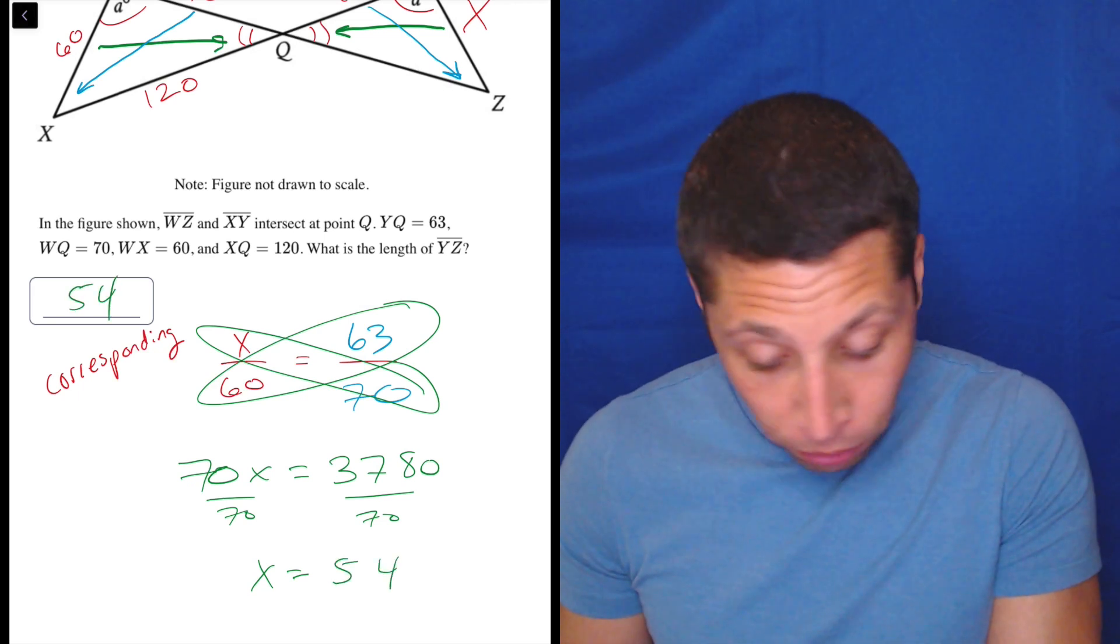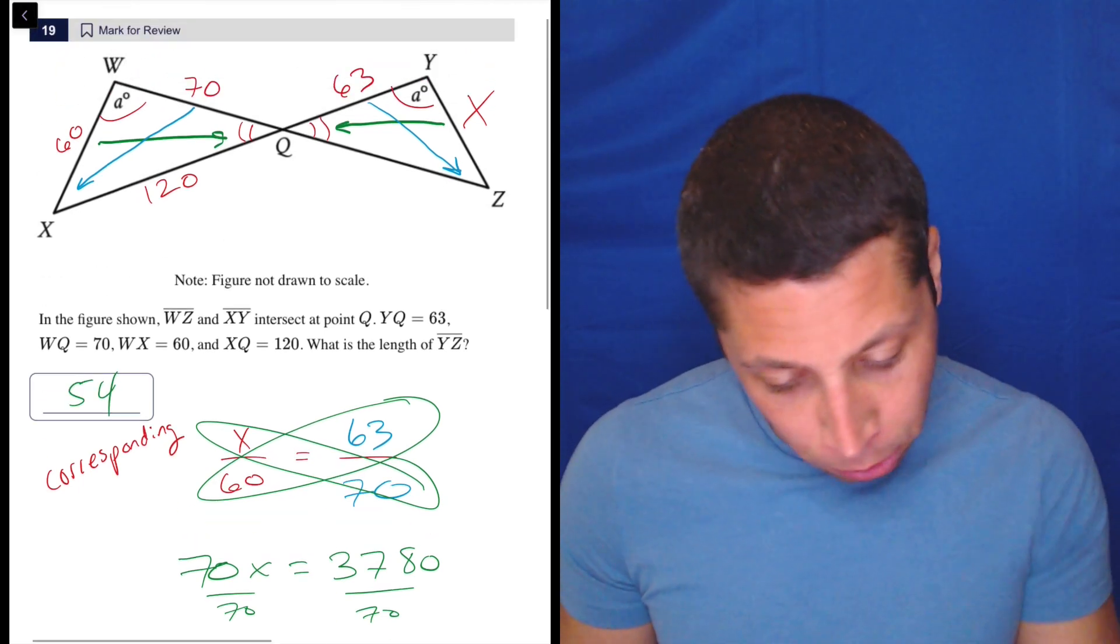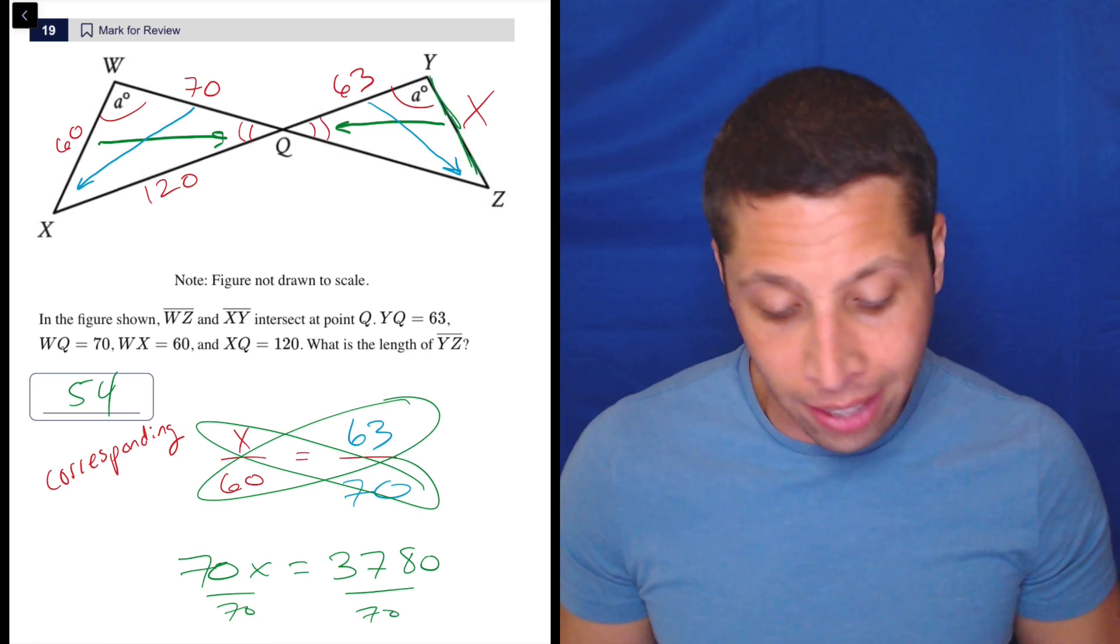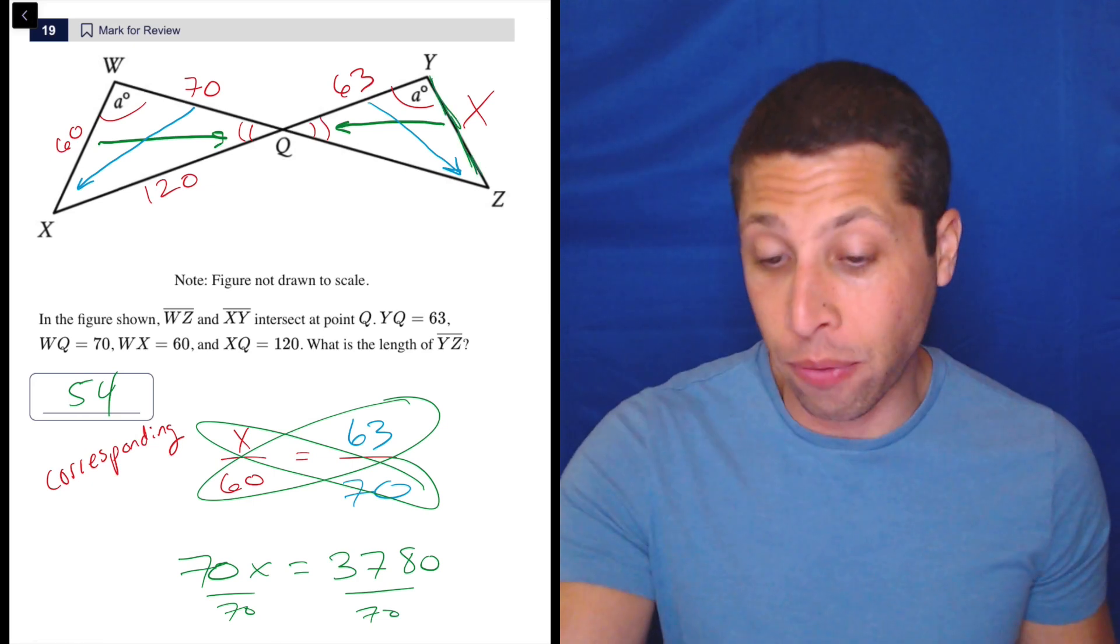And that's hopefully the answer. We should always check with geometry that we solved for the thing we're supposed to. So YZ, it's not like they wanted to get us like WZ or some weird side. So 54 is the answer.